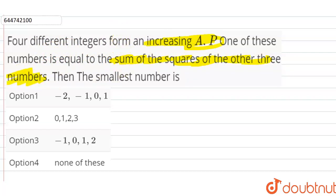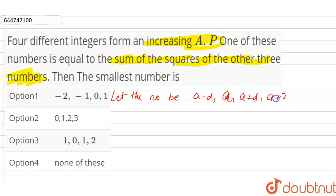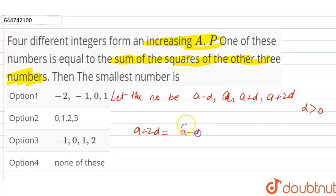Let the four numbers be a minus d, a, a plus d, and a plus 2d, where d is greater than zero because it is an increasing AP. According to the condition, one number equals the sum of squares of the other three, so: a plus 2d equals (a minus d) squared plus a squared plus (a plus d) squared.